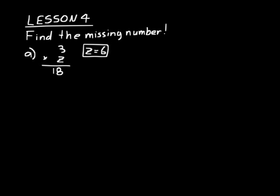Let's think about this using fact families. How could we rewrite this to figure out what z is? We could make 18 the dividend and 3 the divisor. That's always what you can do when you have a missing number in a multiplication problem — as long as it's not the product that's missing. The product becomes the dividend, and the other factor becomes the divisor.